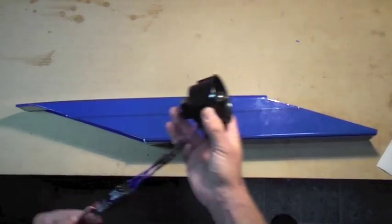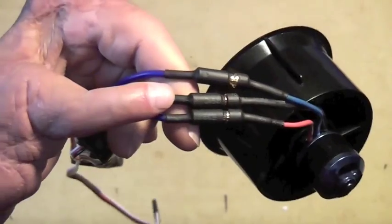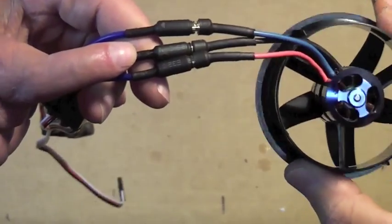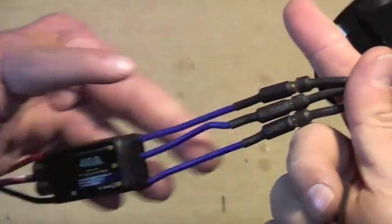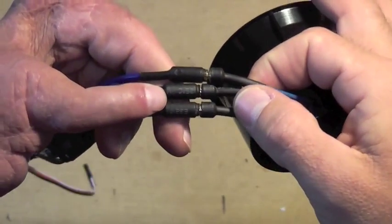We're ready to install the ducted fan unit right about here. Now before you install your ducted fan unit, make sure that it turns the correct way because once you get all this wiring and speed control inside the fuselage tube it's difficult to take it apart.